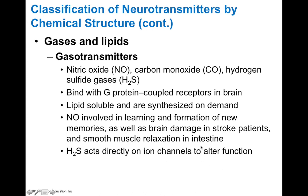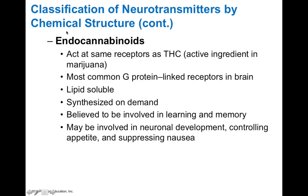Hydrogen sulfide acts directly on ion channels to alter function of different cells. The endocannabinoids are a class of molecules made by cells in your body including the nervous system, and they act on the same receptors as THC, the active ingredient in marijuana. Your body makes similar molecules, and they're the most common G-protein coupled receptor in the brain. These molecules are lipid-soluble, so they accumulate within your fats. They're synthesized on demand and are believed to be involved with learning and memory, neuronal development, controlling appetite, and suppressing nausea.